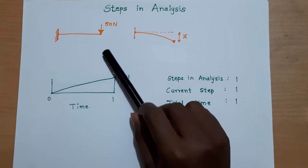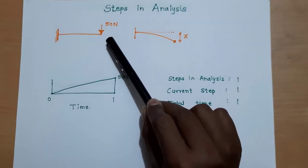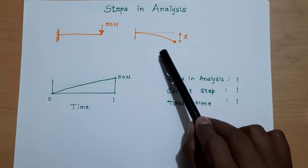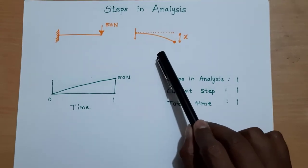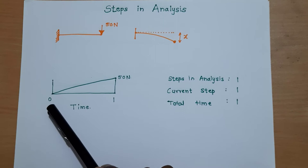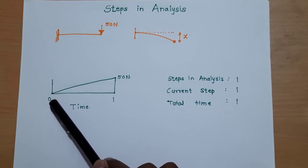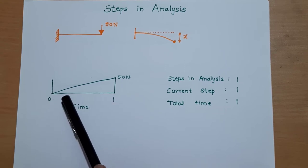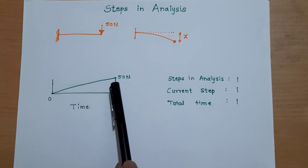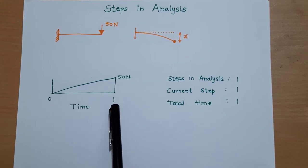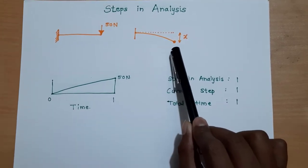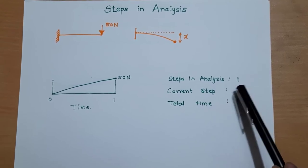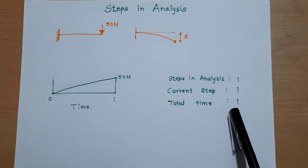I am taking one example here: a cantilever beam on which 50 Newton is applied. If we do the analysis, we will get some result in which the cantilever beam is deflected by some deformation X. This is a single step analysis. At time 0, there is no force acting on the cantilever beam. The analysis is carried out from 0 to 1 second, during which the load increases from 0 to 50 Newton linearly. At 1 second we get the result — the last step result is the deformation. The step in this analysis is 1, the current step is 1, and the total time is 1 second.